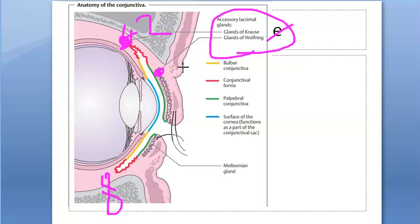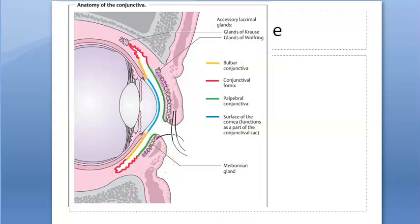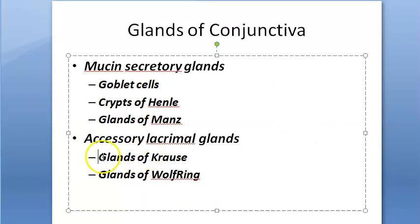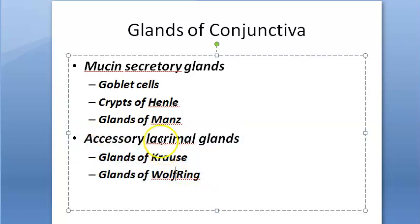Glands of Wolfring are present along the upper border of the superior tarsus and along the lower border of the inferior tarsus. So in accessory lacrimal glands there are two: glands of Krause and glands of Wolfring. Krause is in the fornix; Wolfring is in the palpebral conjunctiva.